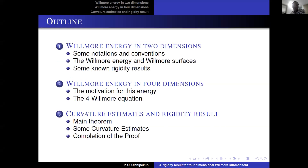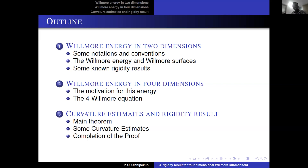The outline of my talk is as follows. I will begin with what is already known in literature, which is the Willmore energy in two dimensions. From there, I will talk about some rigidity results known for sub-manifolds or surfaces. Then I will gradually move into four dimensions, look at the Willmore energy in four dimensions, and discuss where this energy came from. I'll talk about the four-Willmore equation, and then end the talk with several curvature estimates and the rigidity results themselves.